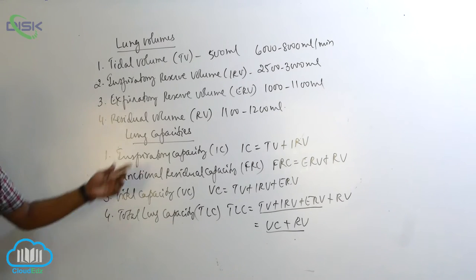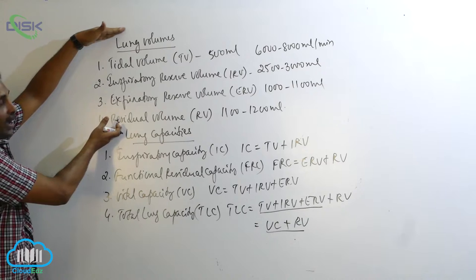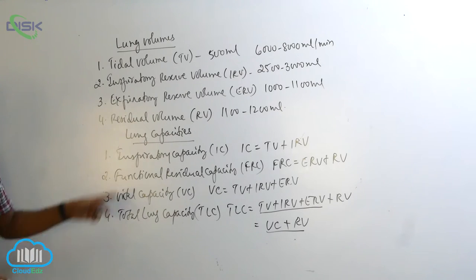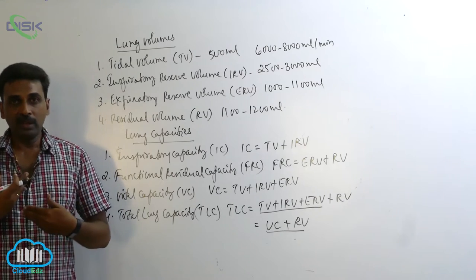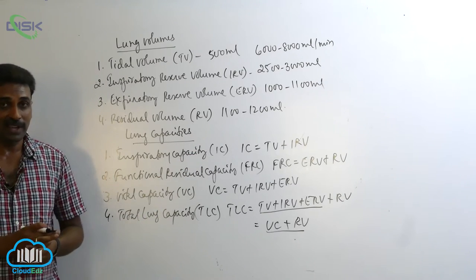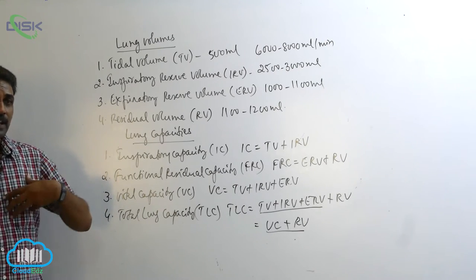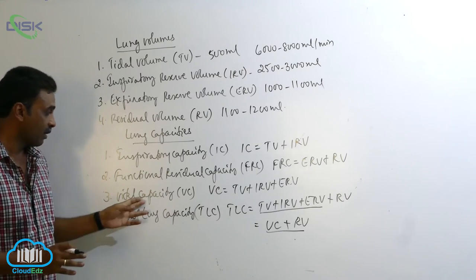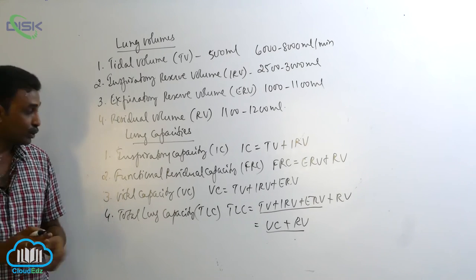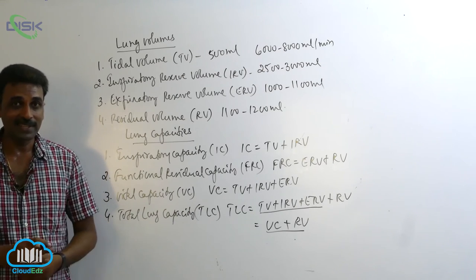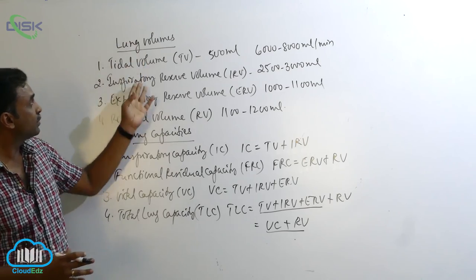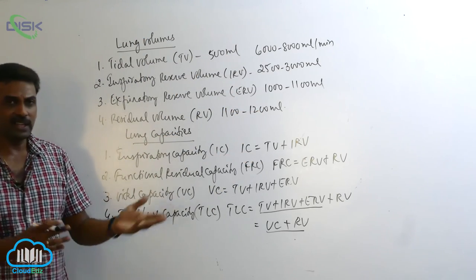To summarize lung capacities: we get lung capacities by combining two or more lung volumes. Inspiratory capacity — after normal expiration, the maximum amount of air a person can inhale. Functional residual capacity — after normal expiration, the amount of air still left behind in the lungs. Vital capacity — after taking the deepest breath, the maximum amount of air a person can push out. And total lung capacity — the maximum amount of air that stays in the lungs after the deepest breath. Lung volumes already have numerical values, and when we combine them we get the lung capacities.